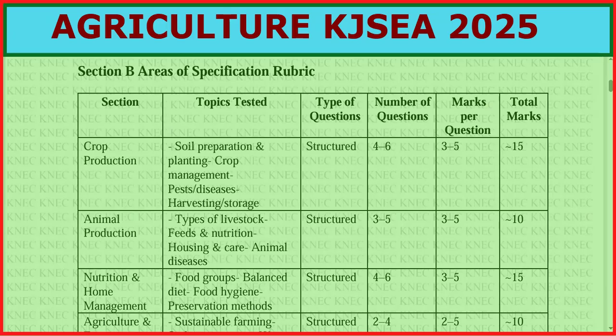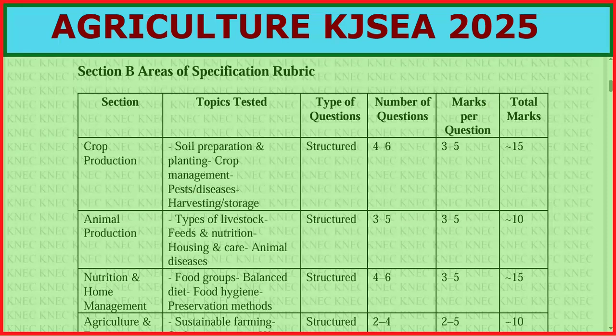We also have animal production: types of livestock, feeds and nutrition, housing and care, and animal diseases. These are structured, three to five questions, three to five marks per question, giving us 10 marks total.